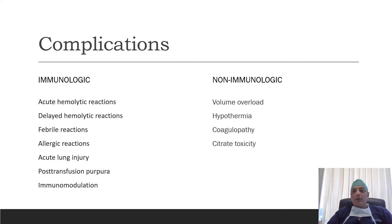The transfusion of RBC is not entirely a safe procedure and is associated with its own hazards. The main complications are divided into immunologic and non-immunologic. Immunologic complications include acute hemolytic reactions, delayed hemolytic reactions, febrile reactions, allergic reactions, acute lung injury, post-transfusion purpura, and immunomodulation. Non-immunological complications include volume overload, hypothermia, coagulopathy, and citrate toxicity.